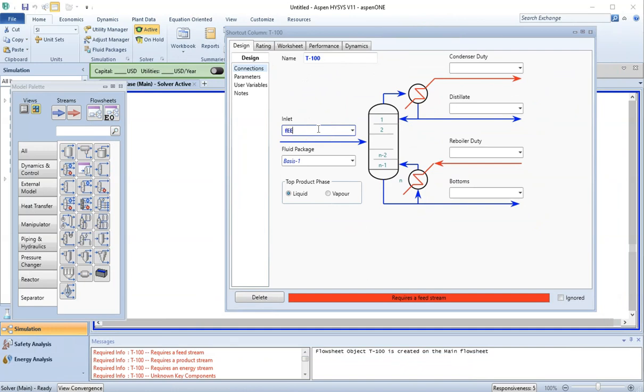For the inlet, let's say this is my feed stream. At the top we have the condenser, here we have the reboiler at the bottom, and the top product. For phase here we will choose vapor because we know we have the vapors at the top. Overhead vapor will be my top product. Condenser duty, let's say I call it QC. Reboiler duty, let's say I give it QR, and the bottom is the bottom product.